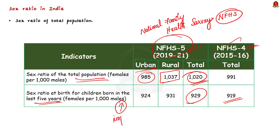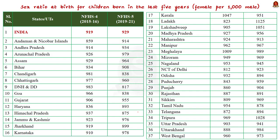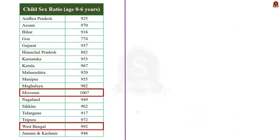You can find the data for your state in the table shown. Note that in NFHS-5 the child sex ratio is only available for 18 states — it is not available for the whole country, the remaining states, or union territories. As per the available data, Mizoram has the best child sex ratio at 1007, followed by West Bengal and Meghalaya.